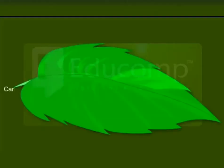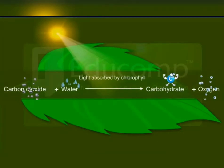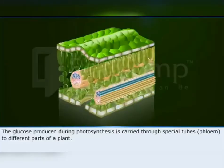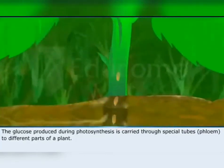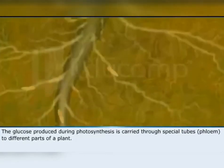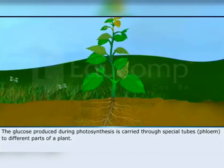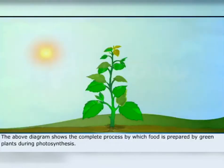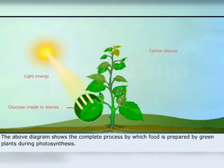Here is an equation that summarizes the process of photosynthesis. The glucose produced during photosynthesis is carried through special tubes to different parts of a plant. The above diagram shows the complete process by which food is prepared by green plants during photosynthesis.